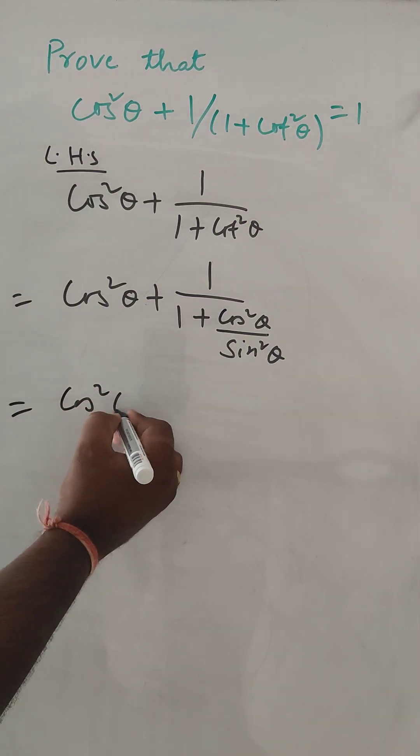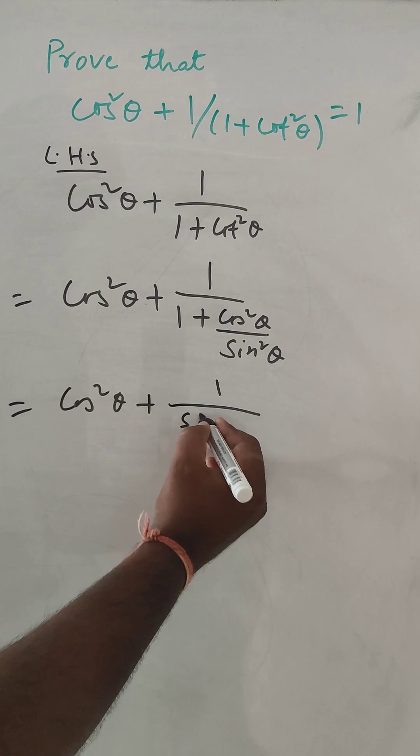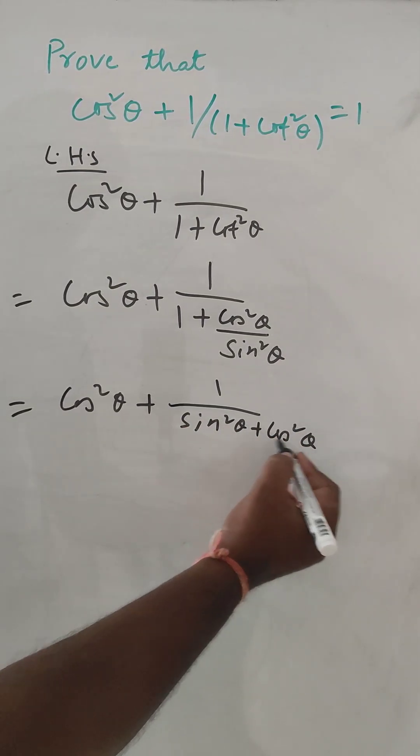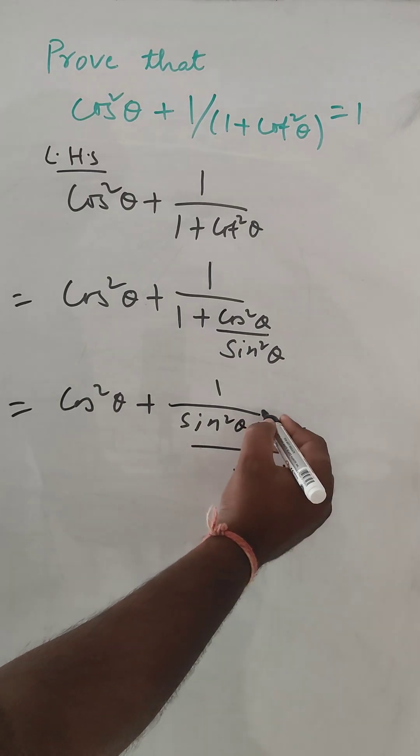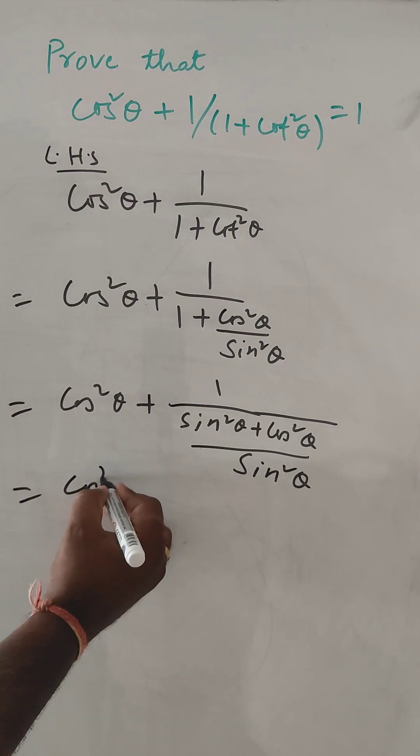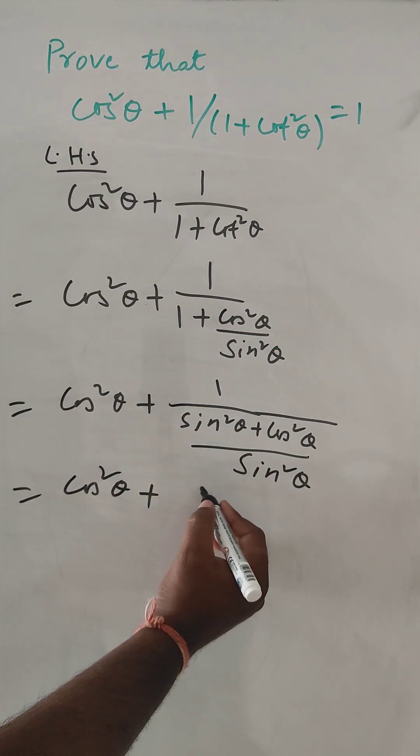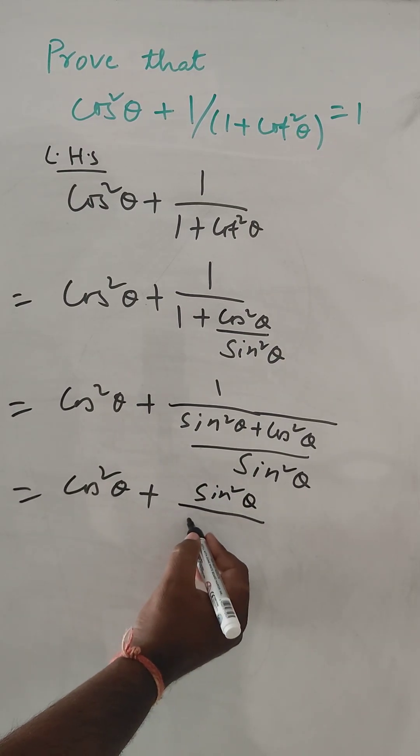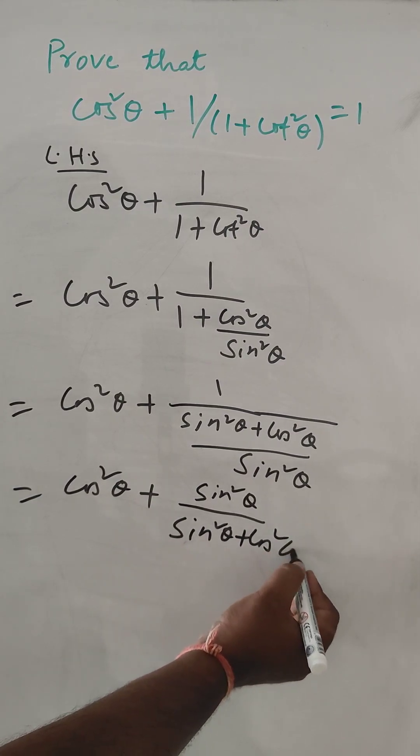So cos square theta plus 1 by sine square theta plus cos square theta divided by sine square theta. So this cos square theta plus this will go up sine square theta. And then sine square theta plus cos square theta.